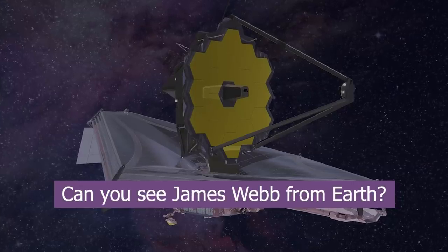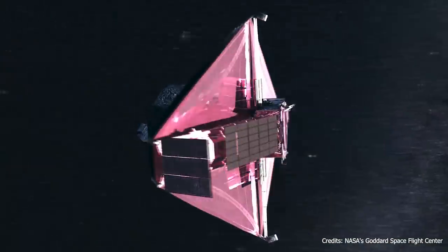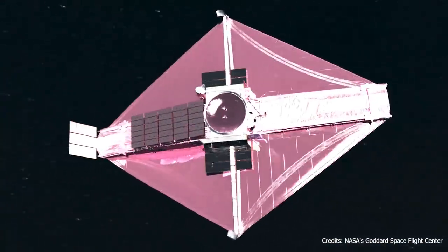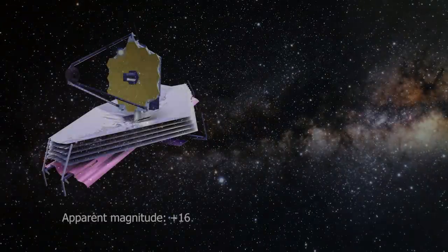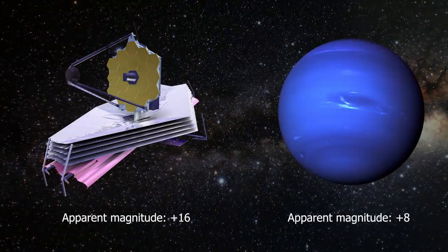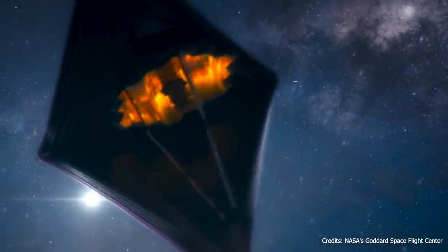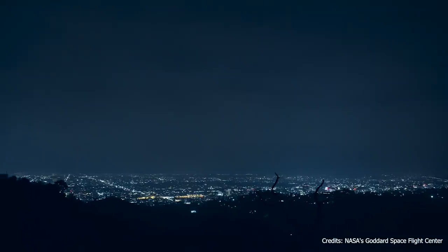Can you see James Webb from Earth? Now that James Webb has arrived at L2, its magnitude equals roughly plus 16. That's two times fainter than Neptune, the farthest known planet in the solar system. So unless you have a large telescope, there's no way you can spot James Webb in the sky.